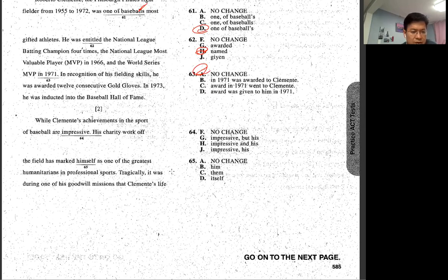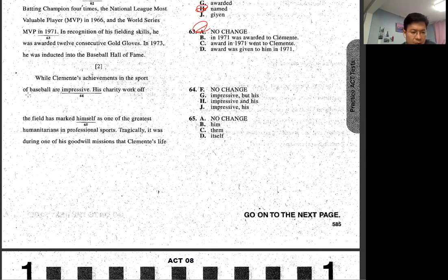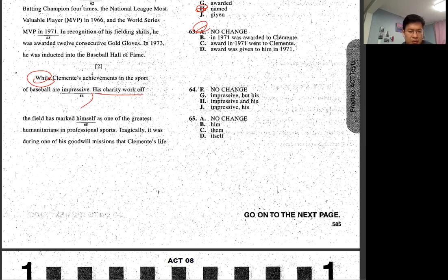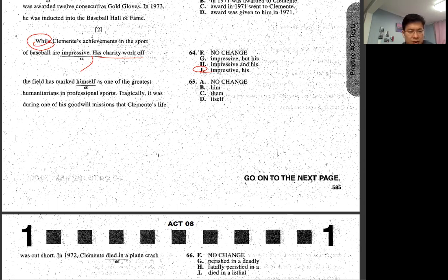While Clements achievements in the sport of baseball are impressive, he's charity workout field as mark. So we have while, then we have to have comma and then like continue, which is J. While the field has marked himself. Field is subject, himself you can't use it because subject and subject to be he to use himself.